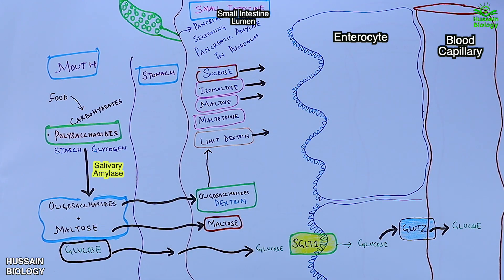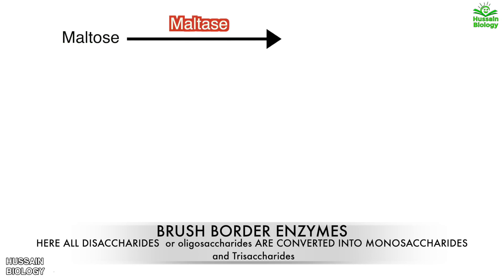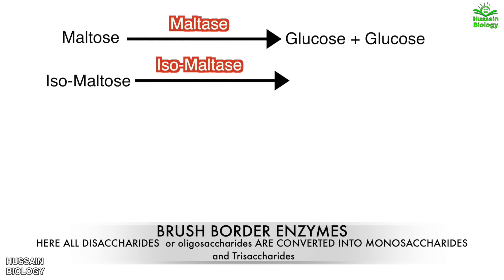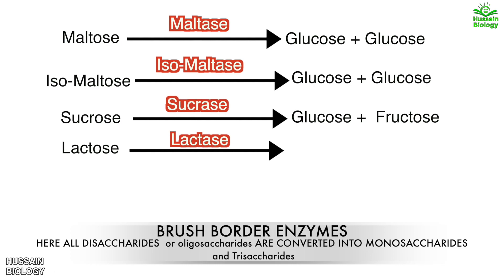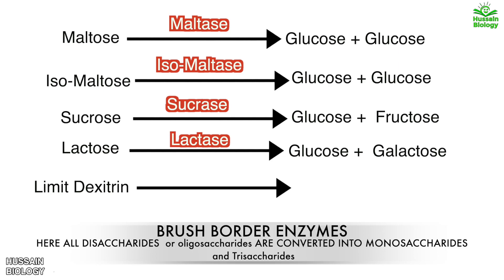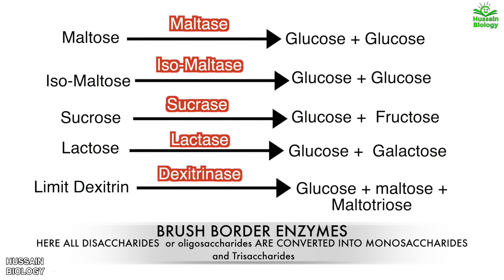All these disaccharides are acted upon by brush border enzymes. Maltose is acted upon by maltase and converted into two molecules of glucose. Isomaltose is acted upon by isomaltase and also converted into two molecules of glucose. Sucrose is acted upon by sucrase and converted into one molecule of glucose and one of fructose. Lactose is acted upon by lactase and converted into glucose and galactose. Finally, limit dextrin is acted upon by dextrinase and converted into glucose, maltose, and maltotriose.